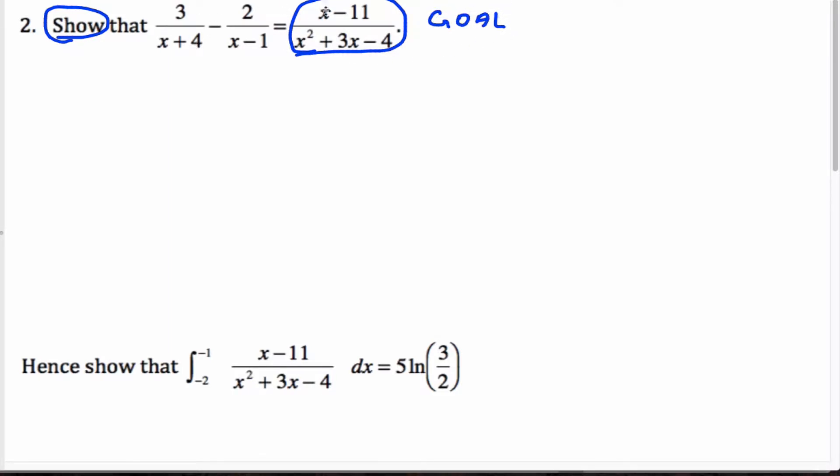Then we can use this result, hence show - hence use the result above to do this integral. So given this, and we know this equivalence which is shown above, we can do a simpler integral of these two separate pieces.